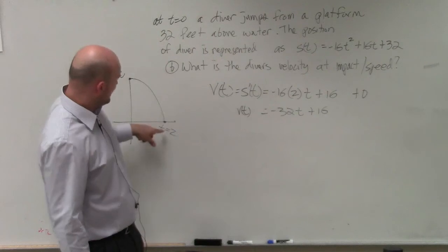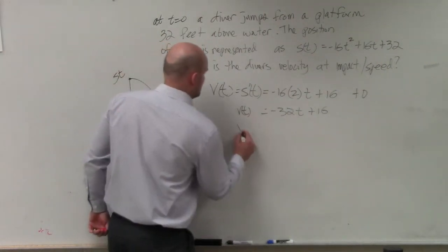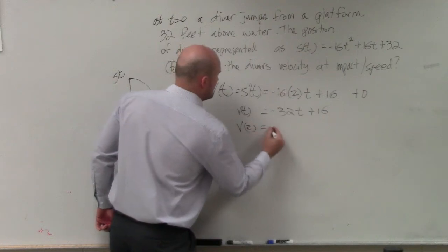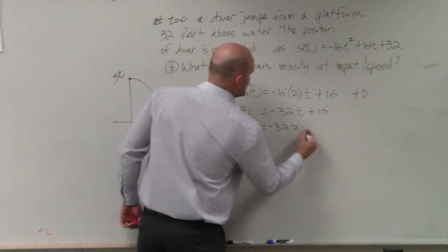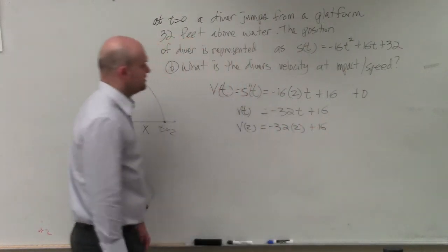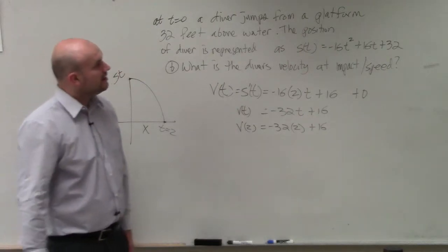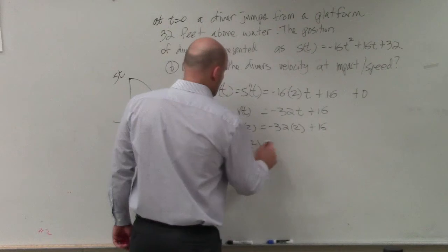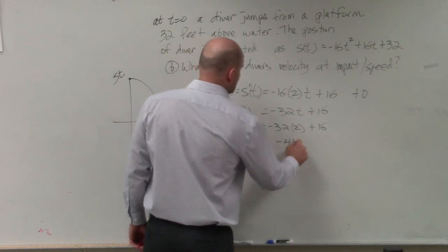So if we want to find the velocity at 2 seconds, v of 2 equals negative 32 times 2 plus 16. 32 times 2 is 64. Minus 16 is going to be negative 48.